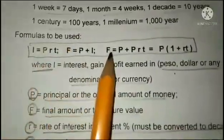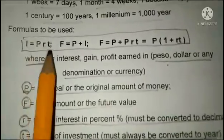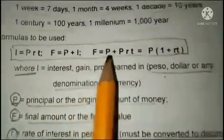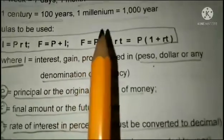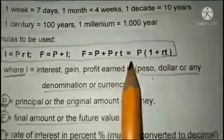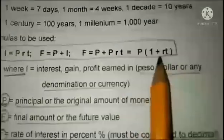Here are the formulas to be used. We have interest equals principal rate time: I = Prt. Future value equals principal plus interest: F = P + I. Future value also equals P + Prt = P(1 + rt).